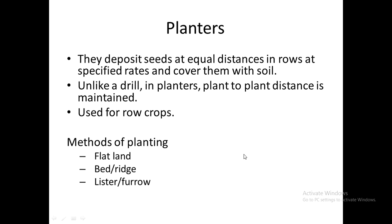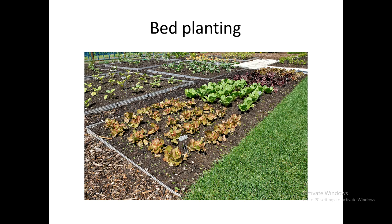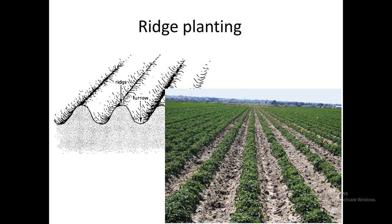There are different methods of planting: flatland, bed or ridge, and lister or furrow. In flatland planting, seeds are planted in a field that is very flat with no slope or inclination. In bed planting, seeds, seedlings, or plants are grown in small separate beds, and each bed can have different varieties of seeds or crops.